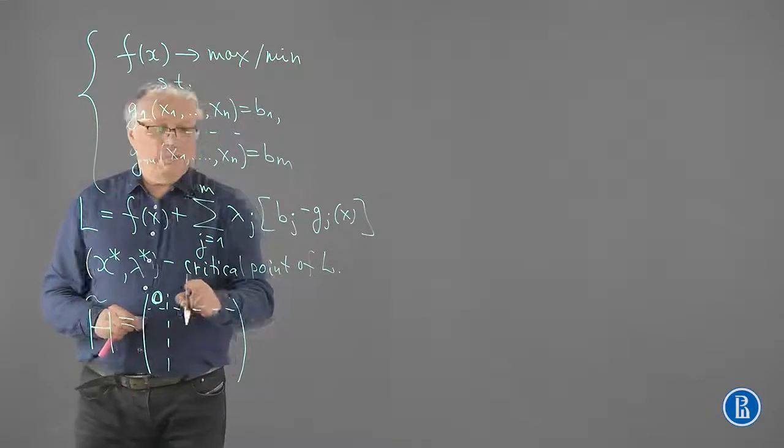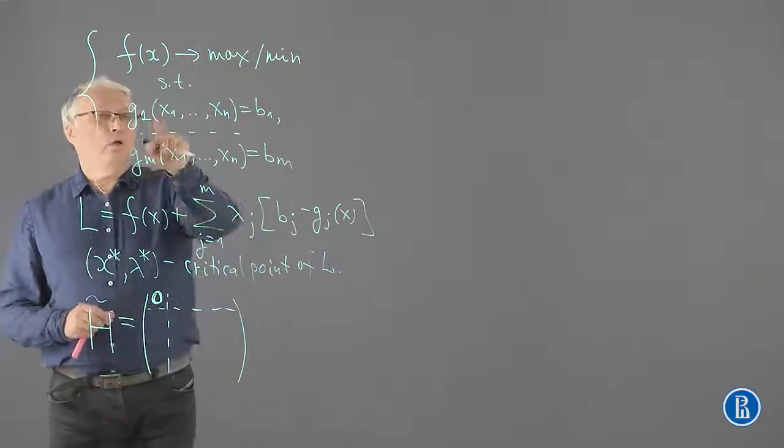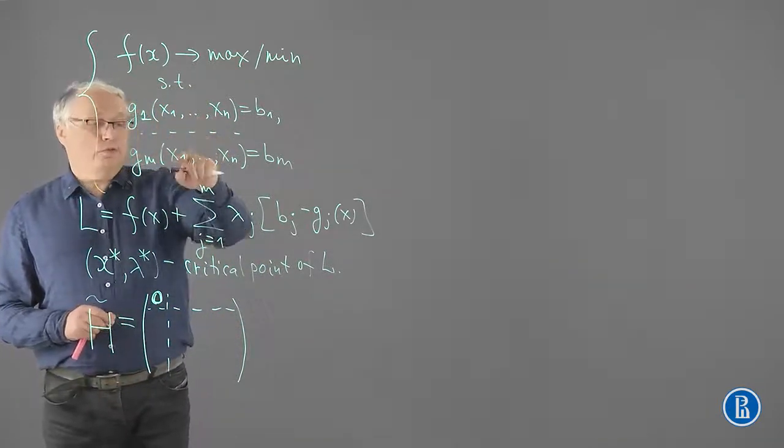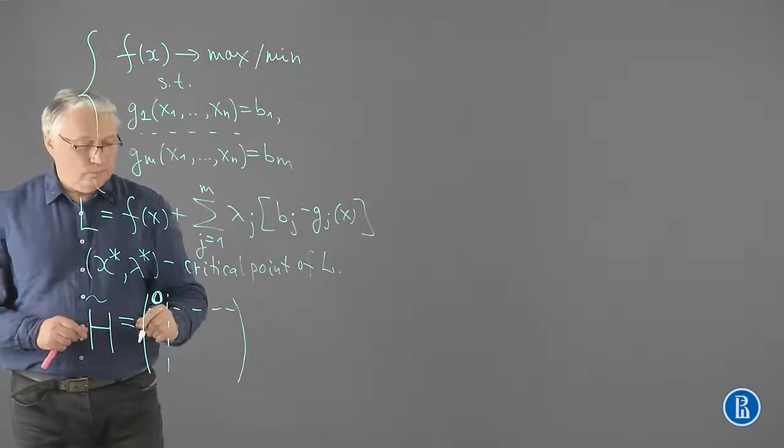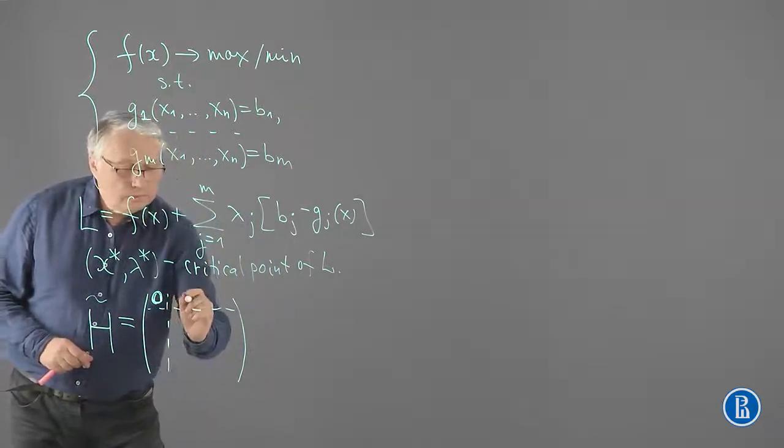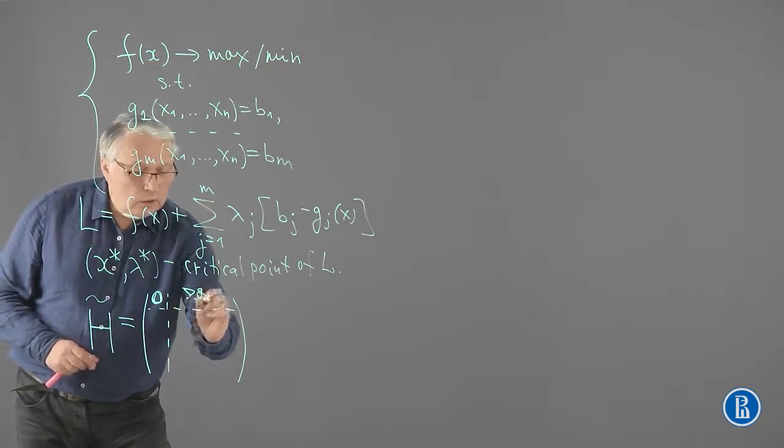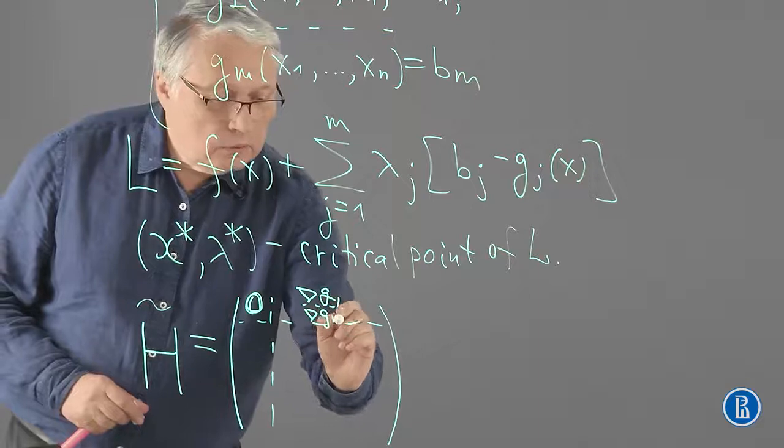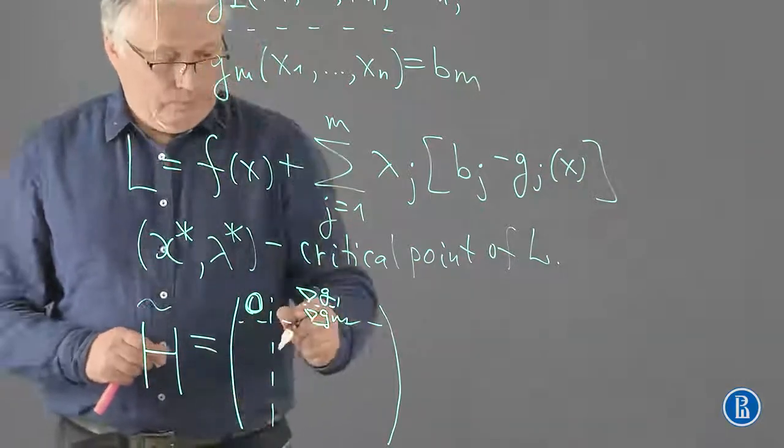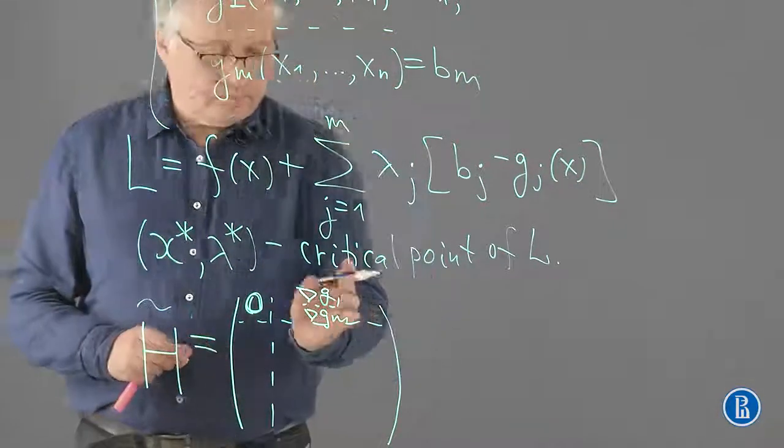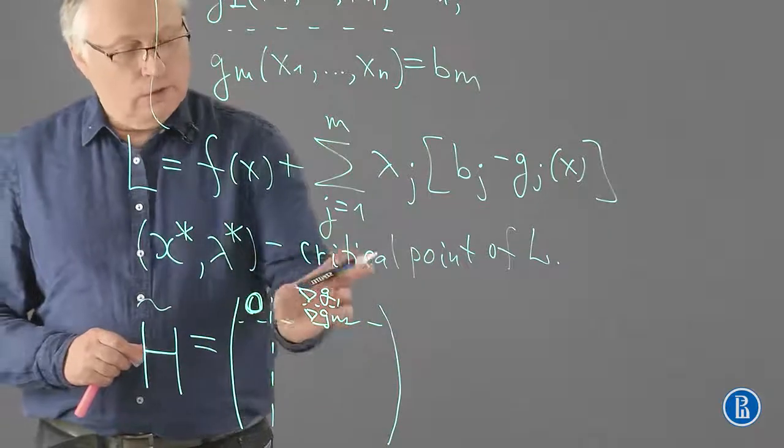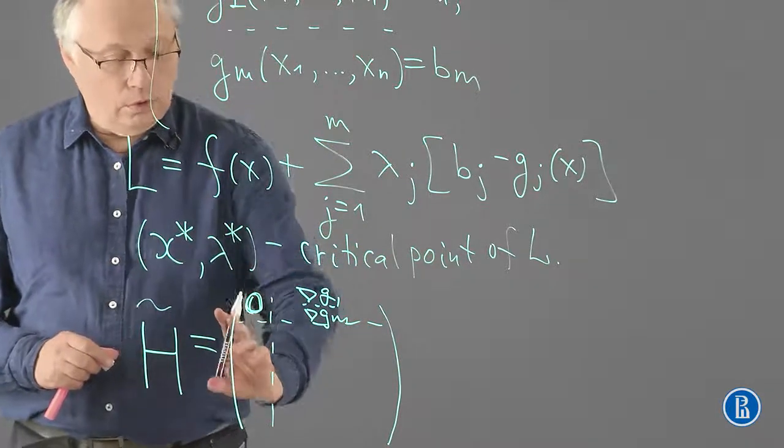Here, we fill in the rows with the gradients of the constraint functions. So we have gradient of G1, gradient Gm, and here we simply transpose this border and these rows become the columns.